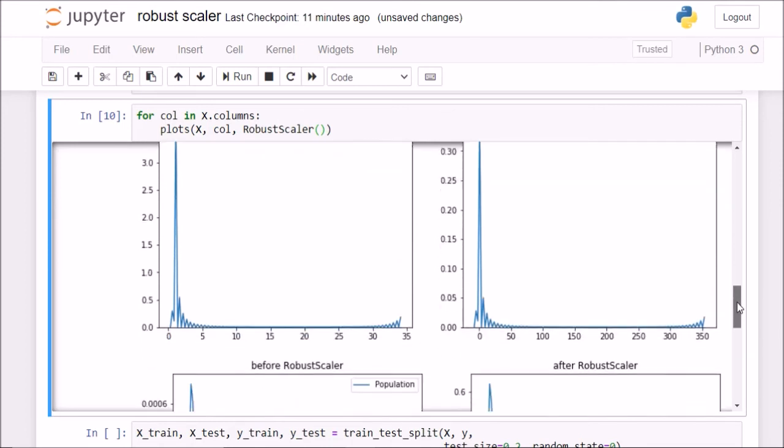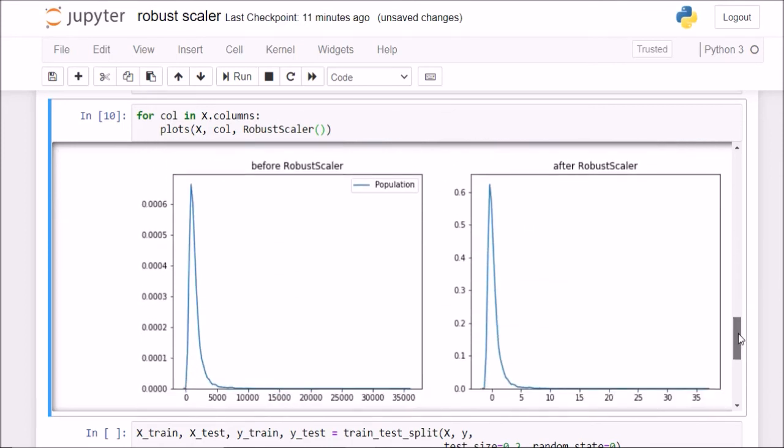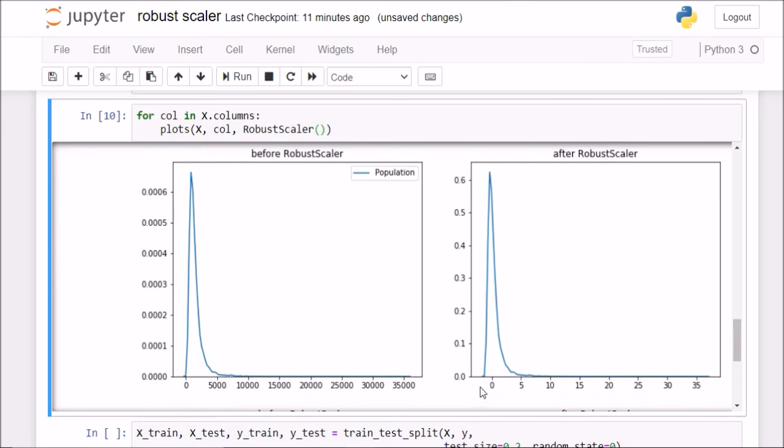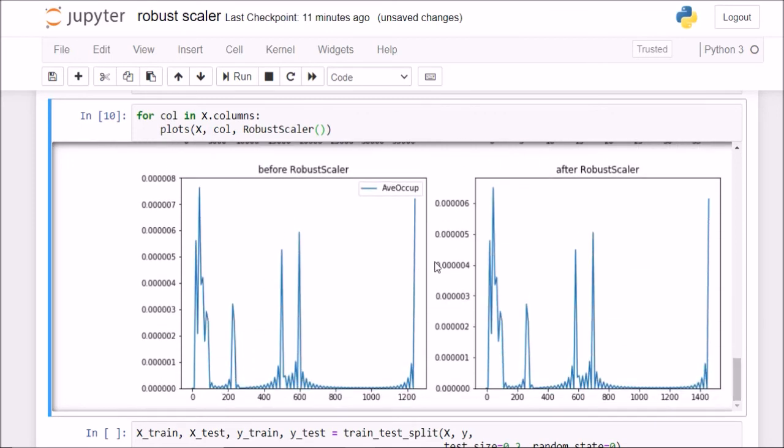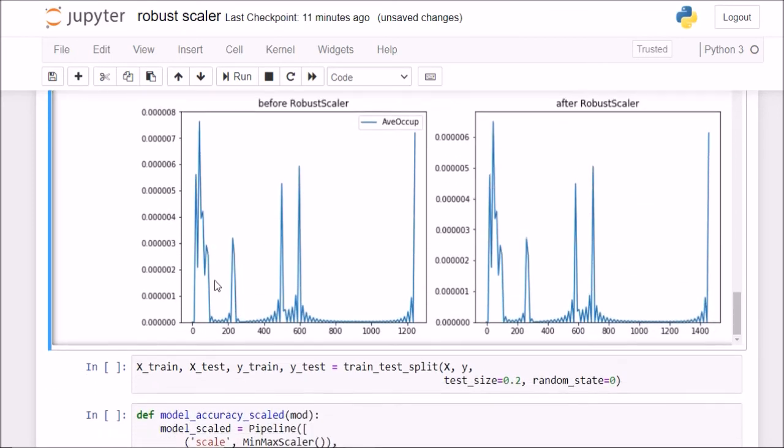And for average bedroom, similar population also similar. But now, value range is between 0 and 35. So the value range has shrunk from 0 to 35,000. So it is a little bit better now. But average occupancy, it is the same right even now.